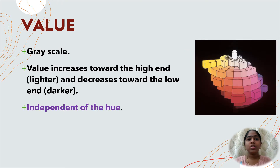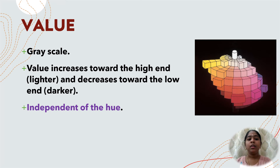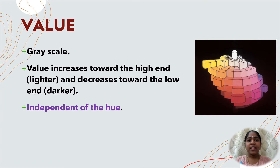Value is also known as the grayscale. From the diagram, you can notice value increases towards the higher end — that is the shade gets lighter — and towards the lower end it decreases, that is it gets darker. It's evident in this picture. Value identifies the lightness or darkness of a color, which can be measured independently of the hue.